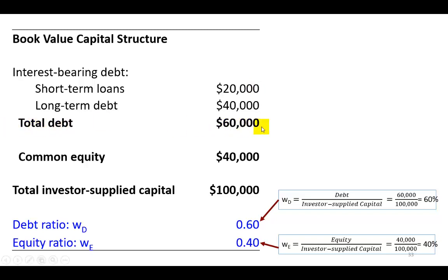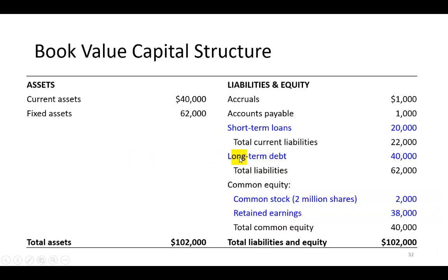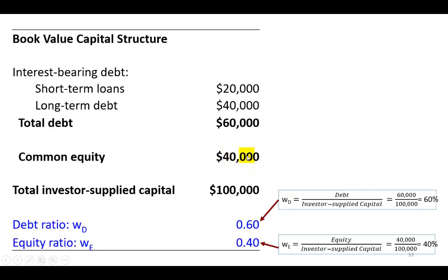Total interest-bearing debt here would be $60,000, the sum of short-term and long-term debt. Common equity is $40,000, which includes the common stock money generated when shares were sold and any retained earnings — portions of profits plowed back into the firm. Total investor-supplied capital is $100,000. The debt ratio is simply debt divided by total investor-supplied capital: 60%. One minus that amount gives us the equity ratio of 40%.